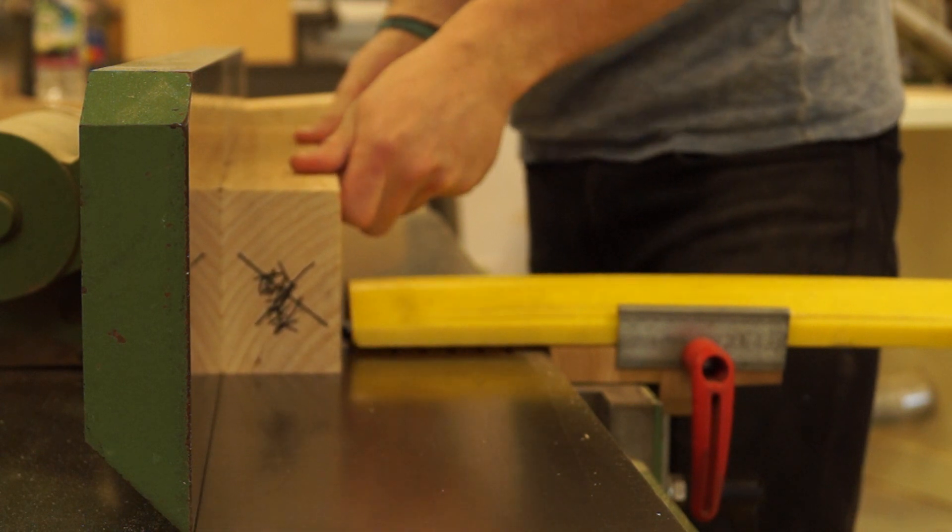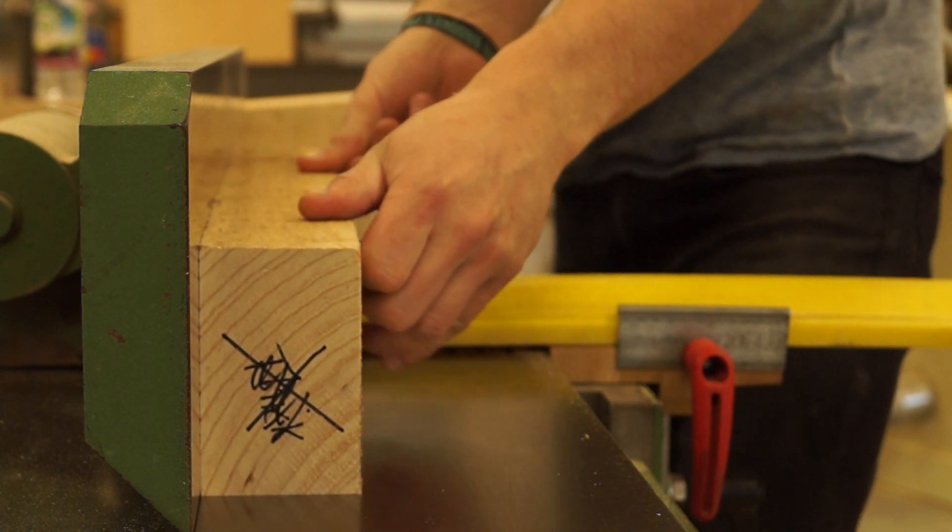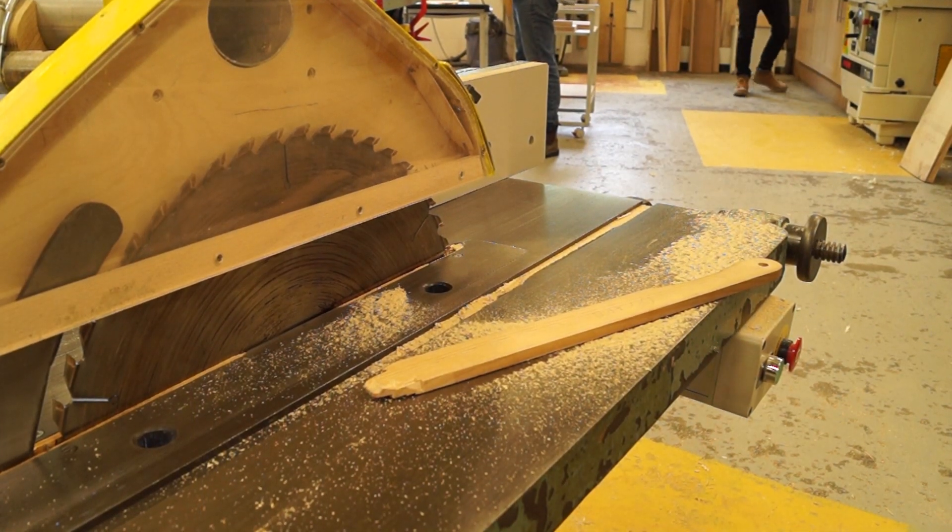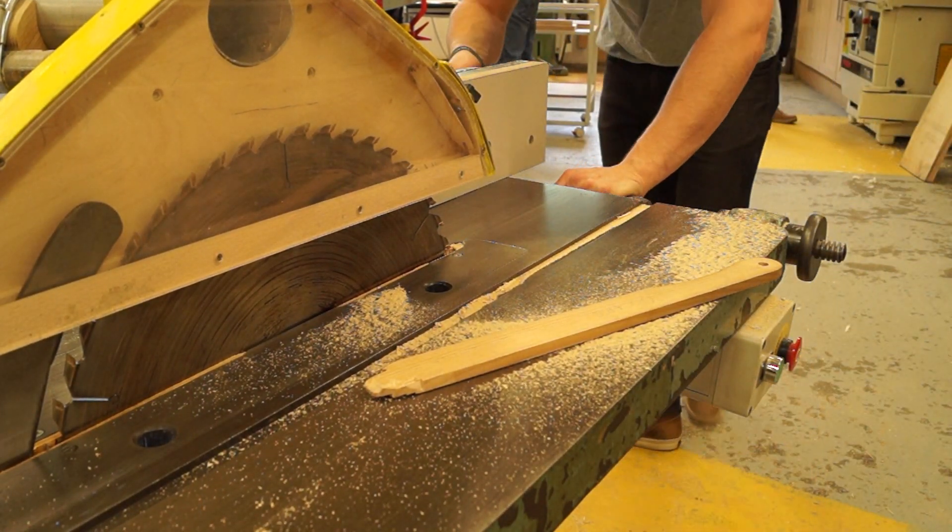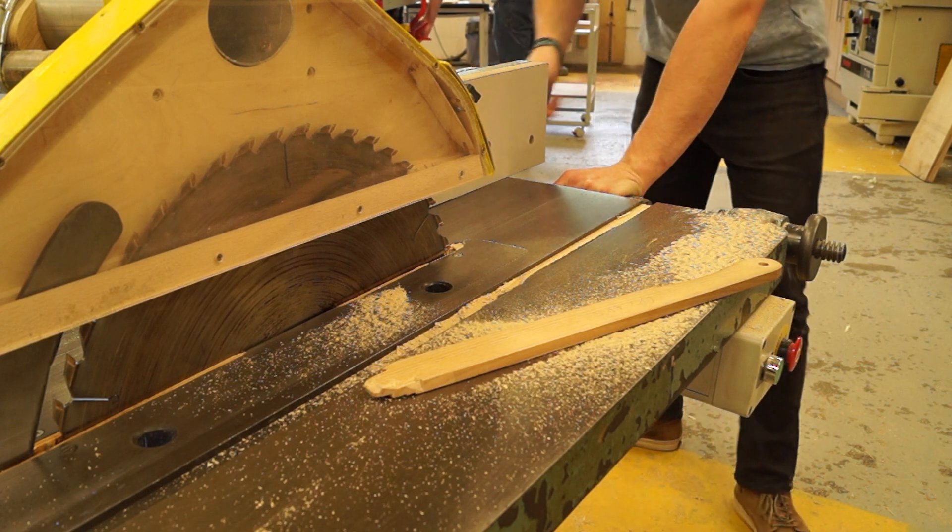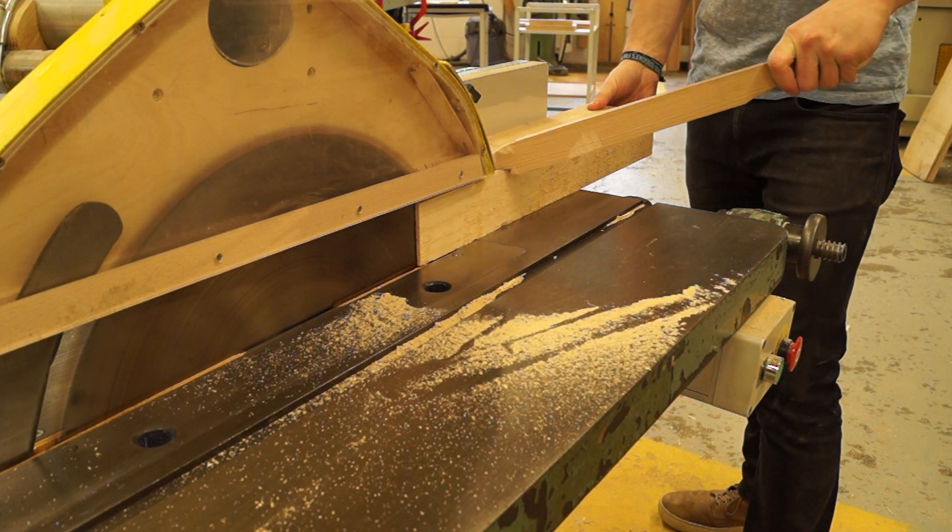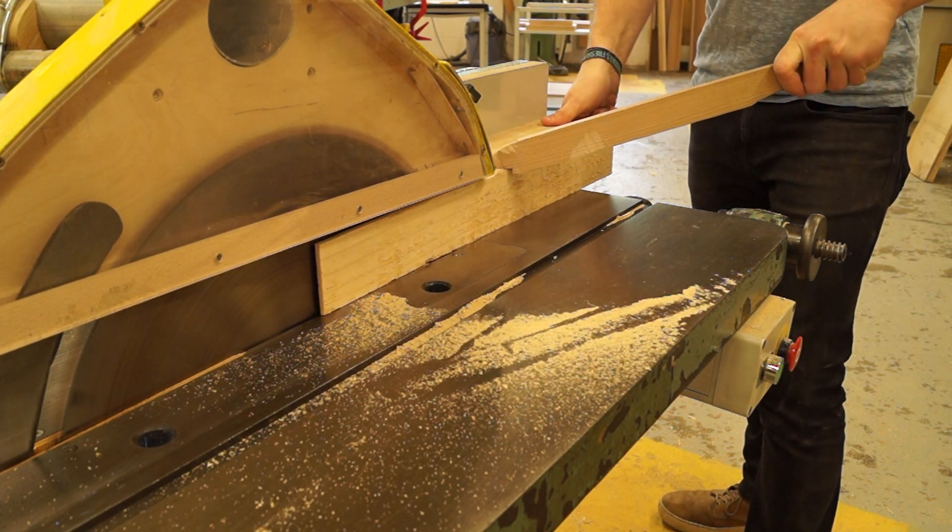Because the design of this workbench is a split top, I need a support under the tabletop. If it's just a solid top all the way through, that solid top bridges the gap between the front and back leg and you don't need any sort of support underneath. Being a split top, the front and back aren't actually joined, therefore it's going to start sagging over time.